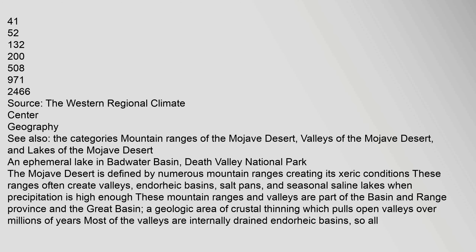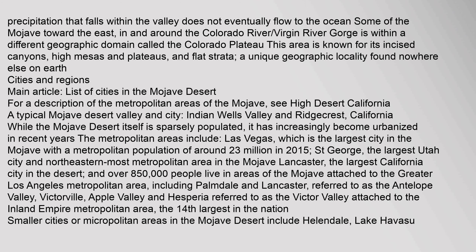The geography of the Mojave Desert includes numerous mountain ranges, valleys of the Mojave Desert, and lakes of the Mojave Desert. There is an ephemeral lake in Badwater Basin, Death Valley National Park. The Mojave Desert is defined by numerous mountain ranges creating its xeric conditions. These ranges often create valleys, endorheic basins, salt pans, and seasonal saline lakes. When precipitation is high enough, these mountain ranges and valleys are part of the basin and range province and the Great Basin, a geologic area of crustal thinning which pulls open valleys over millions of years. Most of the valleys are internally drained, so all precipitation that falls within the valley does not eventually flow to the ocean. Some of the Mojave toward the east, in and around the Colorado River Virgin River Gorge, is within a different geographic domain called the Colorado Plateau. This area is known for its incised canyons, high mesas and plateaus, and flat strata — a unique geographic locality found nowhere else on Earth.